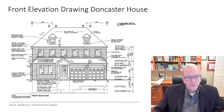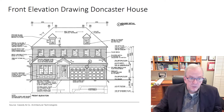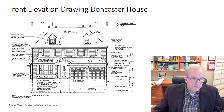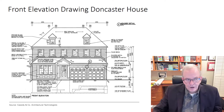We'll talk about door handedness in another video. These windows here — they're not opening. They're FG: fixed glass. They don't open. This is the size of this window off to the left — they couldn't fit the label in, so they put it to the side. That's common: 610 by 760, meaning 610mm wide by 760mm high.